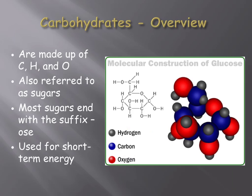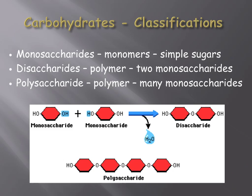Carbohydrates are made up of only the elements carbon (C), hydrogen (H), and oxygen (O). The typical molecular structure of a carbohydrate is provided on the right-hand side of this slide. Carbohydrates typically display a 1 to 2 to 1 ratio of carbon to hydrogen to oxygen, which can also be used to help identify them. Carbohydrates can be classified by their size as monosaccharides, disaccharides, or polysaccharides.